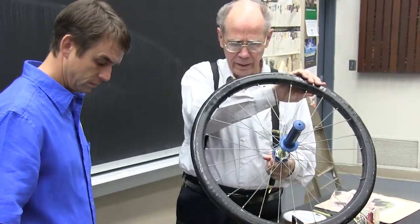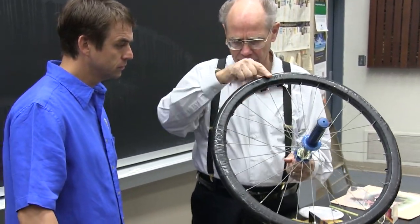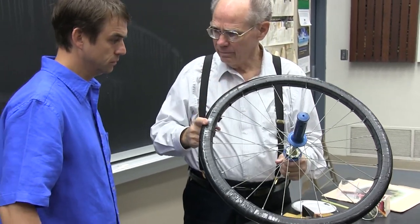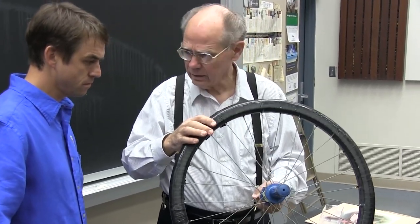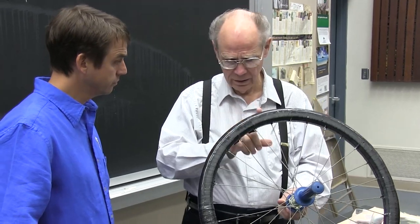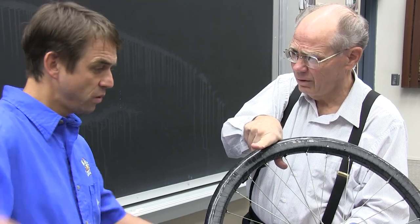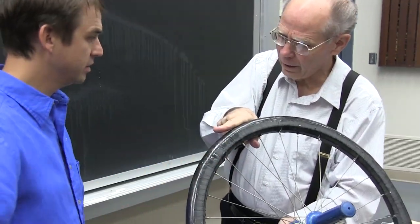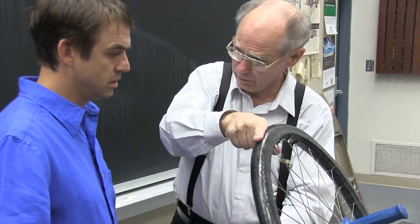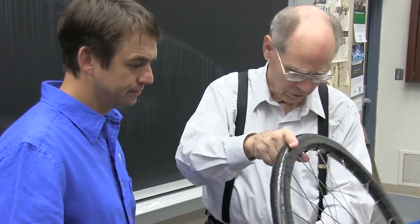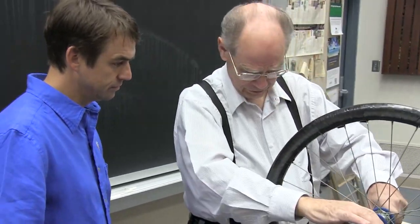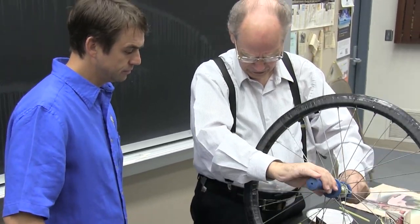Now how does the precession work? Well, suppose that we look at this when it's spinning. Gravity is trying to tip it down, right? But if I'm trying to change the axis, the direction the axis points, now rather than the velocity going this way, it tries to go that way. And that's why it felt like it was pulling that way. What it does is it moves the whole wheel.